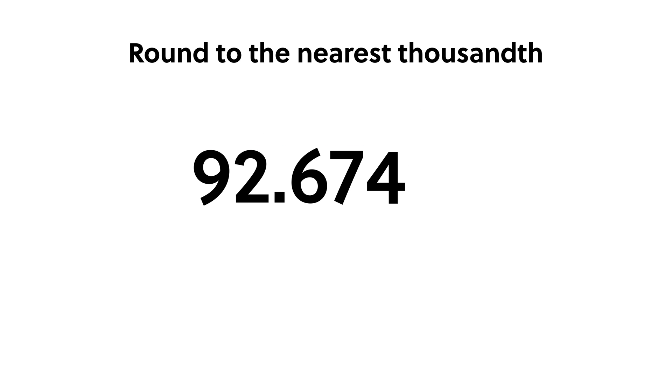This is sometimes called rounding to three decimal places instead of rounding to the nearest thousandth. With enough practice, you will be able to round most numbers almost instantly. There is one case, however, that often leads to confusion: what happens if your rounding digit is a 9 and you need to round it up? You round the 9 up to a 10 by writing 0 in the rounding place and adding 1 to the place to the left.